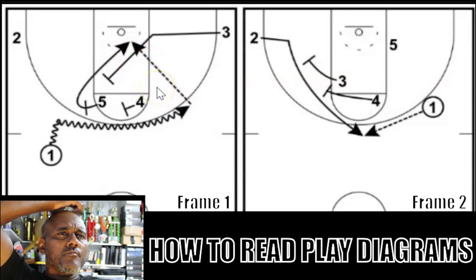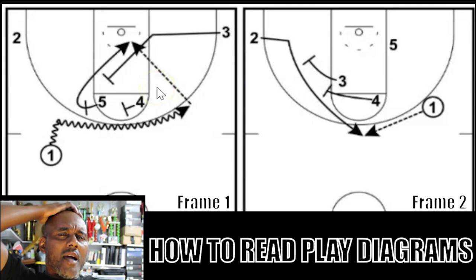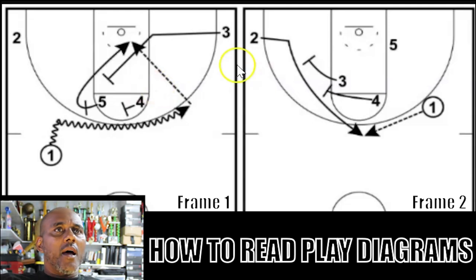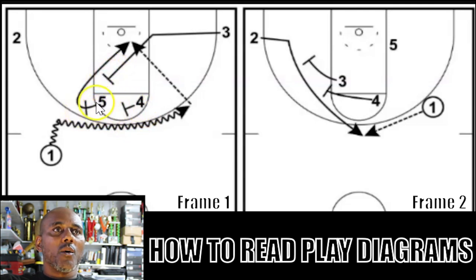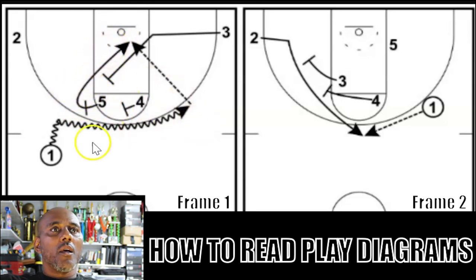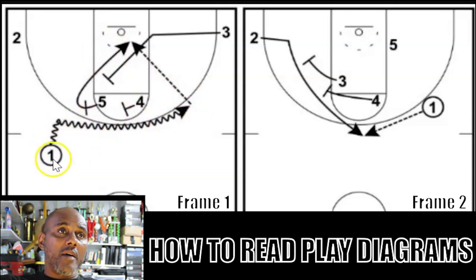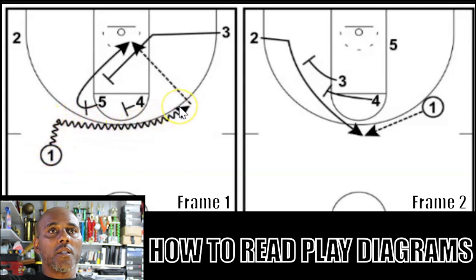Just to review: we have this back screen — we know it's a screen because it has that little T shape at the end. We have these two ball screens — we know they're screens because they have a little T shape. We have this player movement because it's a solid arrow. And then we have this player moving with the ball, shown by a circle, and we know he's dribbling because of the little squiggly line.